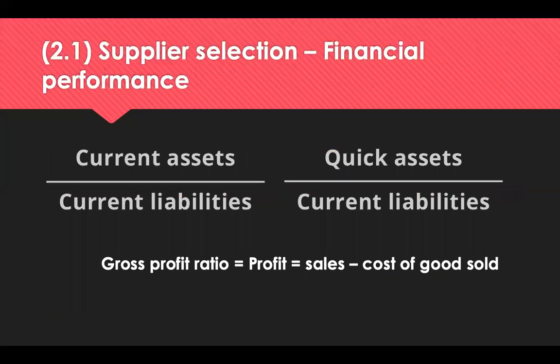If a supplier has financial difficulties, it could result in reduced quality of goods, delays and shortages, price increases and failure to supply. To reduce this risk, you need to research suppliers' financial performance to check if the business is financially stable. Methods you can use include credit ratings, reviewing the balance sheet, reviewing liquidity and profitability, or taking references from other customers.